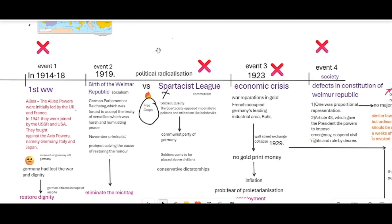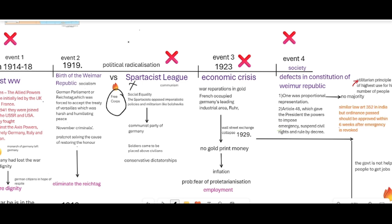The next event in German citizens' lives was the economic crisis of 1923. War reparations had to be paid in gold, but the gold was depleting. France occupied the leading industrial area of Ruhr in exchange for gold. Once they occupied the industrial area, German citizens lost their jobs. Americans tried to help Germany, but they also fell into the Wall Street exchange collapse of 1929, and could not help Germany anymore. Without gold, Germany started printing more money, which led to severe inflation.